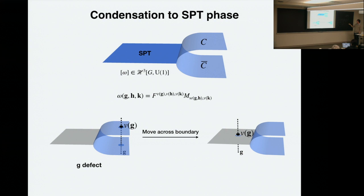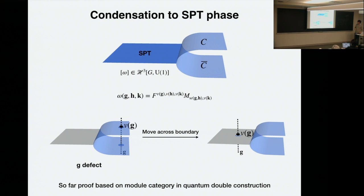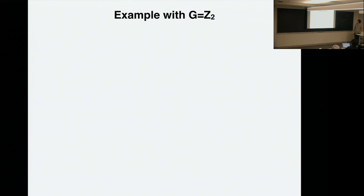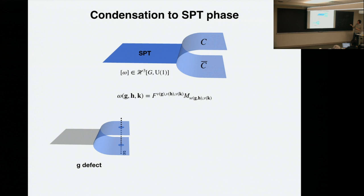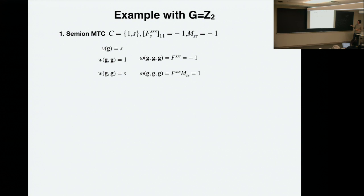The only proof I have for this formula is based on an explicit construction of the boundary in the string-net model. Just to give some examples: let's take the category to be as simple a modular tensor category as you can imagine — the semion theory. Here's the data for semions — it's very simple, you can write it down in one line. Of course, if V is the vacuum then the whole thing is trivial. Everything involves a non-trivial V. In this case the symmetry group is Z2 — there's only one thing to specify. If that action is actually trivial...